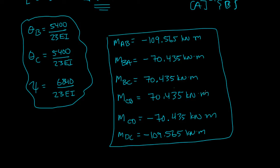that's equal to negative 109.565 kilonewtons per meter. So all I did was figure out what theta B, theta C, and psi were, and I plugged it into those unknown moment equations. And these are the moments on each of the members.